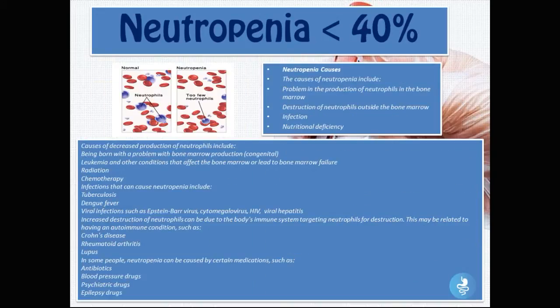Neutropenia is a lower-than-normal level of neutrophils in the bloodstream. It can be caused by a problem in the production of neutrophils in the bone marrow, the destruction of neutrophils outside the bone marrow, infections, and nutritional deficiency.